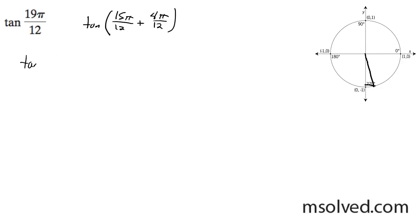So what we can do here, breaking this down, 15π over 12 becomes 5π over 4 and 4π over 12 becomes π over 3.